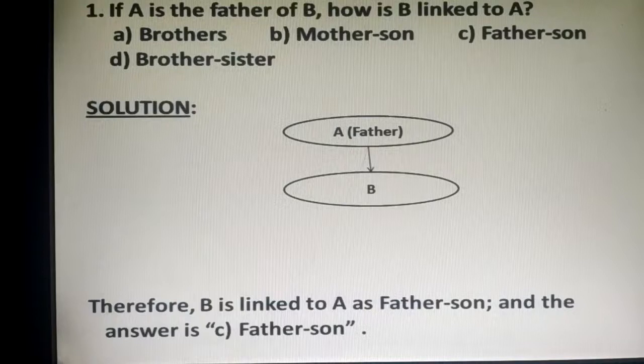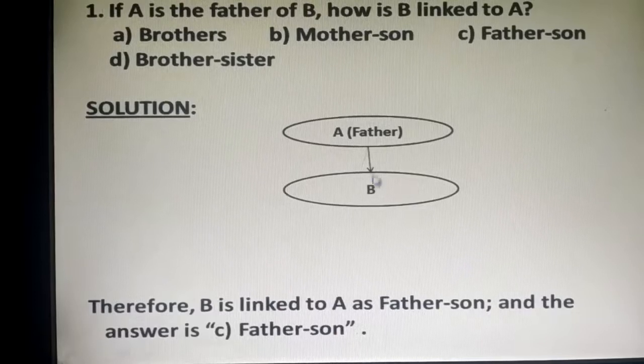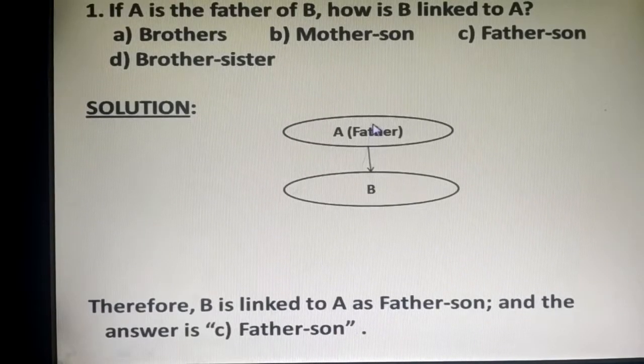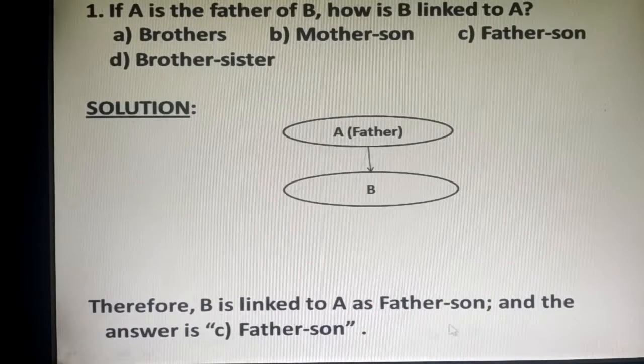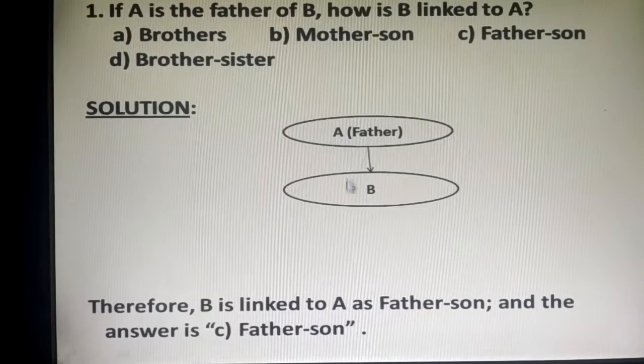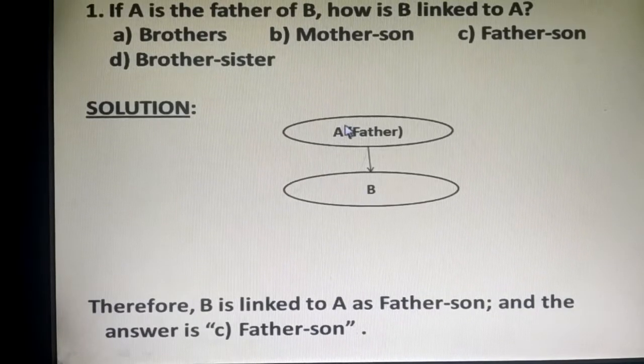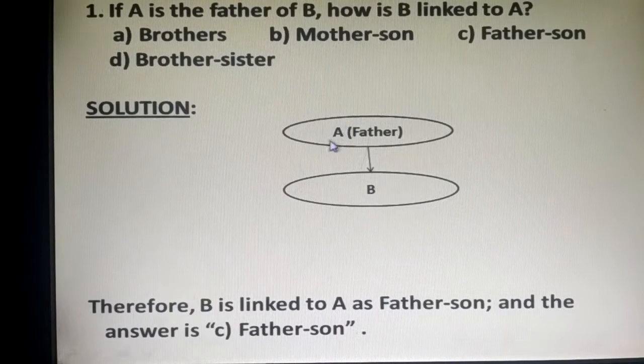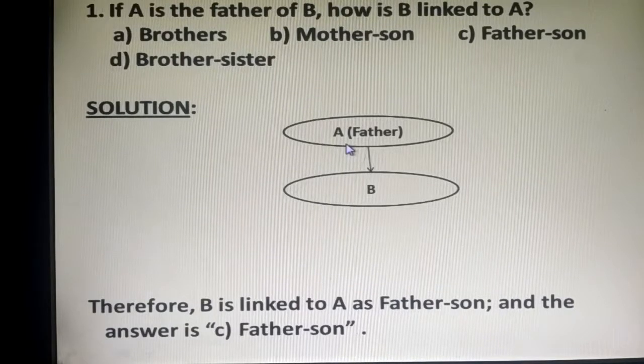Here first question was: If A is the father of B, how is B linked to A? Therefore, B is linked to A as father-son, and the answer is C, father-son. If A is B's father, then what is B to A? A is B's father, B is A's son. So the relation is father-son.